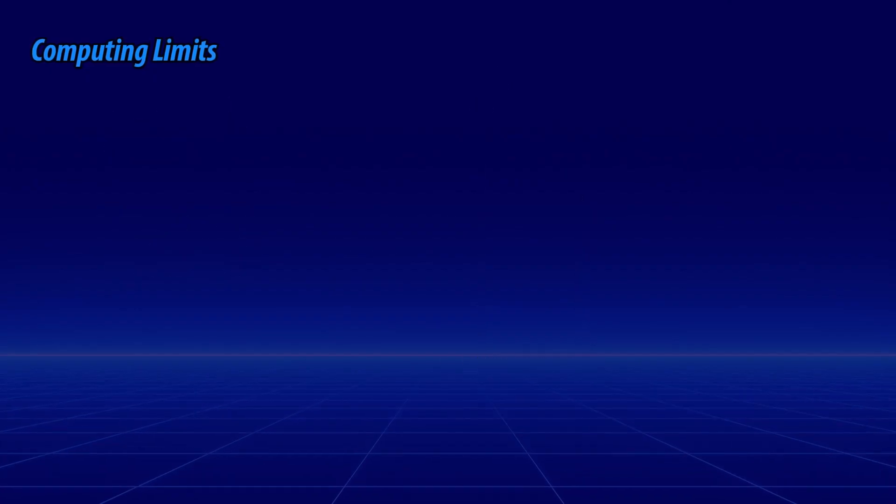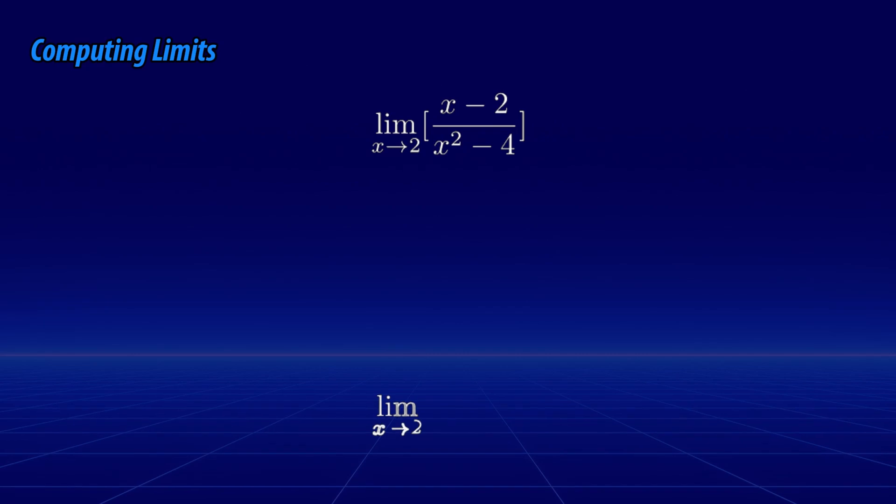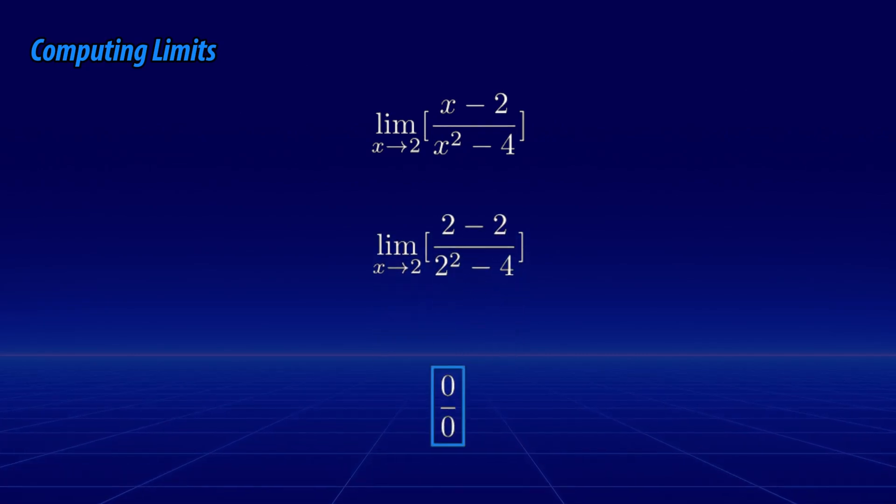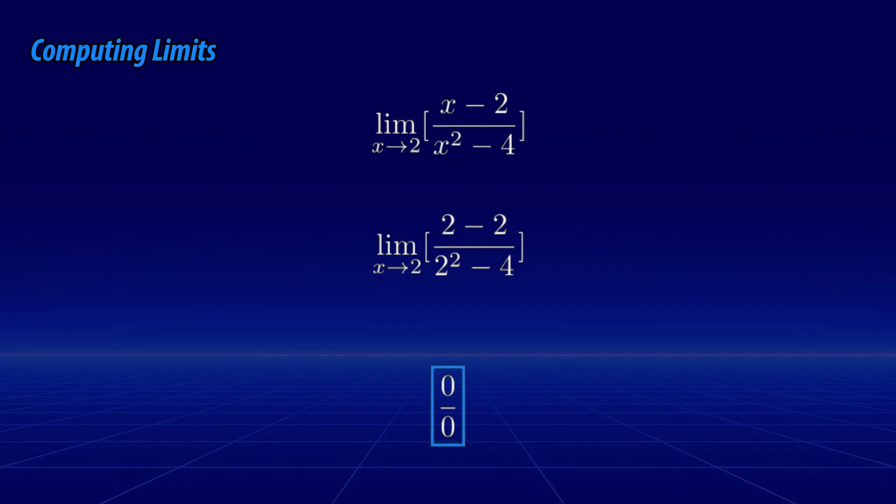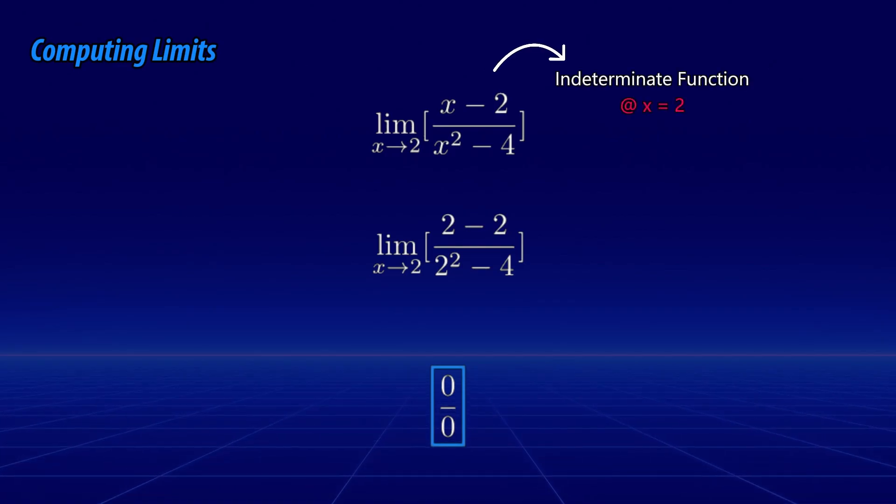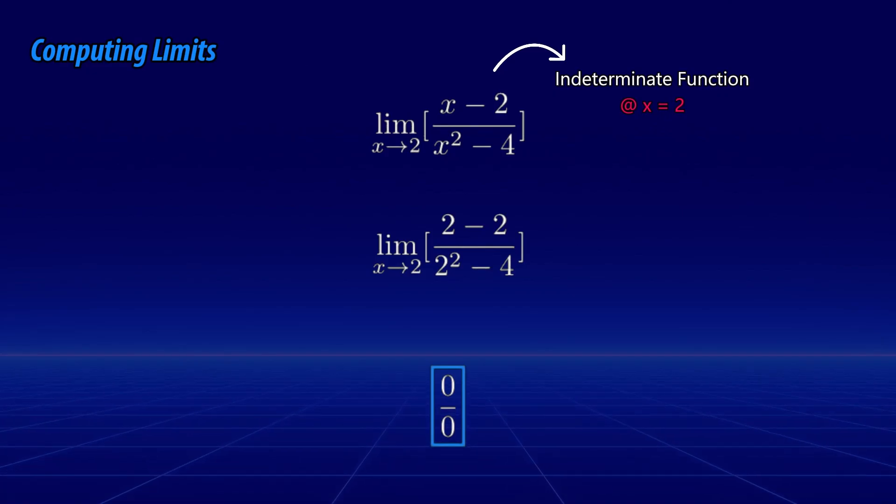Now what if we have the following function? You can see that the result if we follow the same logic would be 0 over 0. This just means that the function is indeterminate at x equals 2. This means that we really don't know what the limit will be until we do some more work.